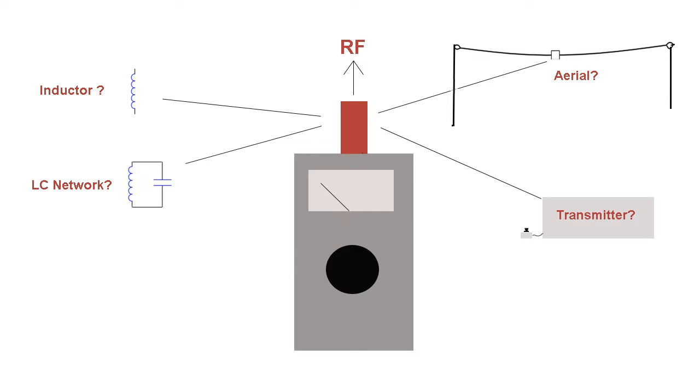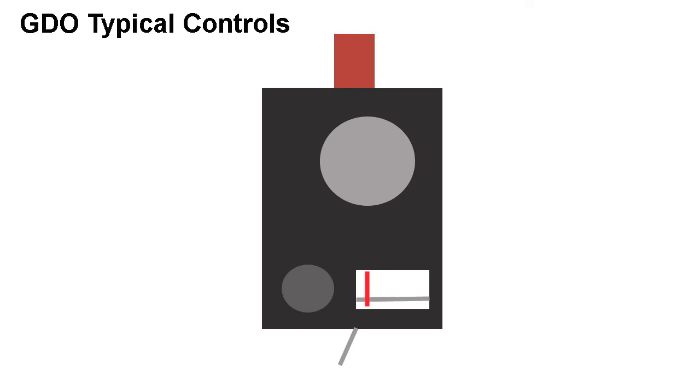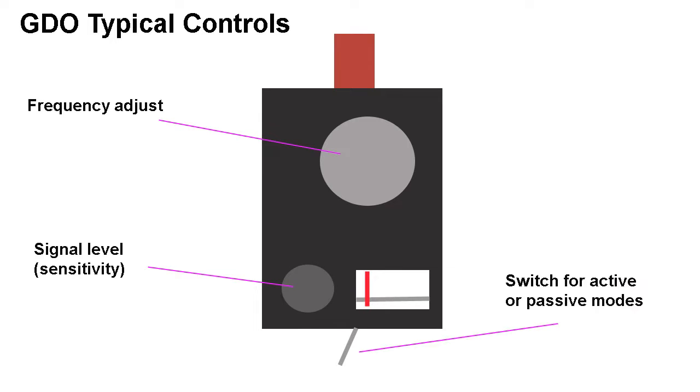This all sounds complicated, but in reality the operation is quite simple. In the most basic form, the GDO might only have three controls: one to adjust frequency, one to adjust signal level, and a switch to toggle between active and passive modes. In active mode, the circuit is powered and generates RF signals to make measurements of inductors, capacitors, and aerials. In passive mode it works as an absorption wave meter for measuring transmitter frequencies.